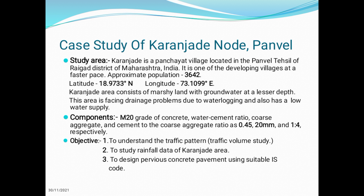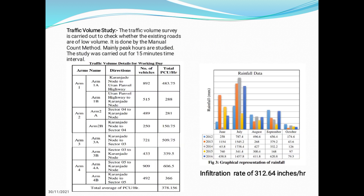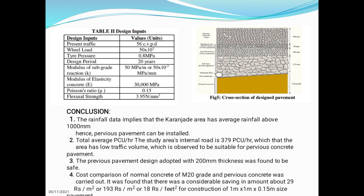The mix components were M20 grade of concrete, water cement ratio, coarse aggregate, and a cement to coarse aggregate ratio of 0.45, 20 mm, and 1:4 respectively. The objectives are to understand the traffic pattern through traffic volume study, to study the rainfall data of Karanjade area, and to design pervious concrete pavement using suitable IS code. The traffic volume surveys were carried out to check whether existing roads are of low volume using the manual count method, mainly studying peak hours at 15-minute intervals. The total average PCU per hour was 378.156. The infiltration rate of 312.64 inches per hour was recorded.